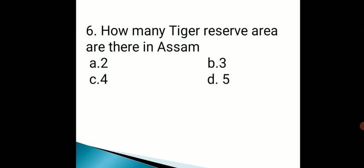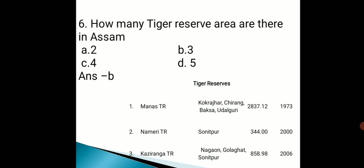How many Tiger Reserve areas are there in Assam? Options are 2, 3, 4, 5. The correct answer is option B, that is 3. The three tiger reserves are: Manas Tiger Reserve, located in Kokrajhar, Chirang, Baksa, and Udalguri districts; Nameri Tiger Reserve, located in Sonitpur district; and Kaziranga Tiger Reserve, covering Nagaon, Golaghat, and Sonitpur districts.